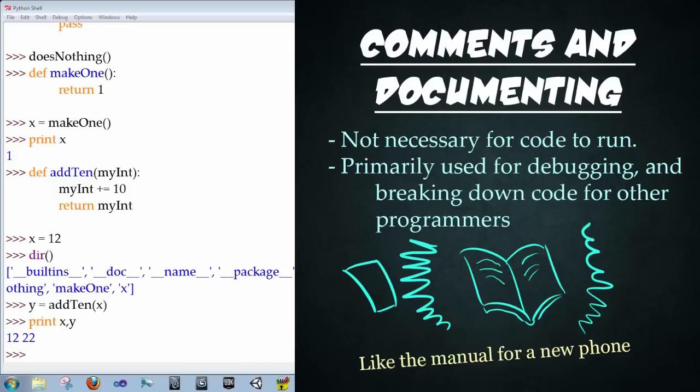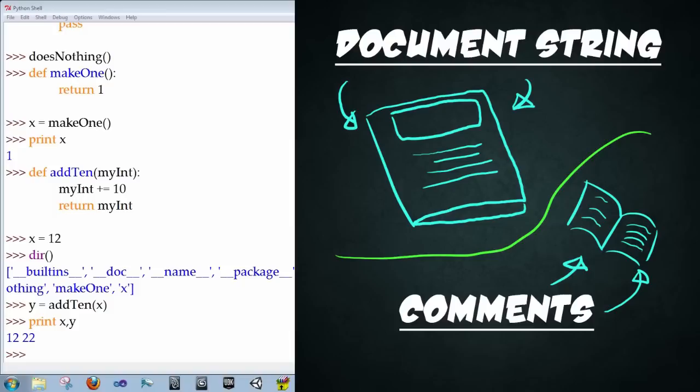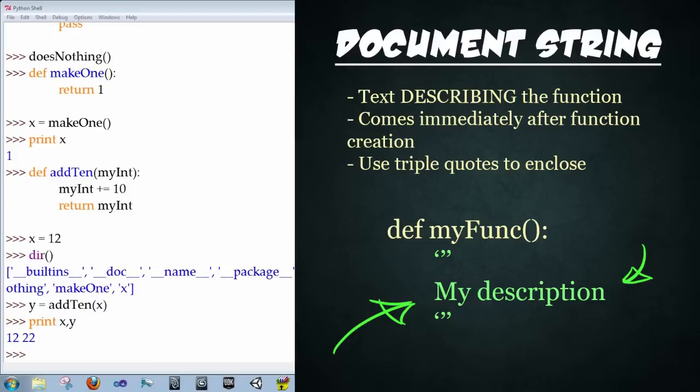So the way this ties back into functions is that you've got the document string, which you can think of as the cover of the manual. And the comments you create within the code are like pages within the manual. Okay, so the document string. What is it? All right, so the document string is a way of creating a short description for your function that can be accessed from anywhere. It comes immediately after your definition of the function, but before any of the actual code. And the way you contain it is with triple quotes on either side of the text.